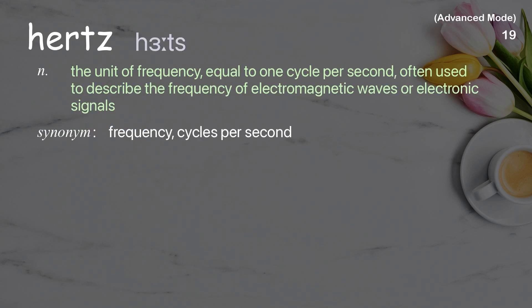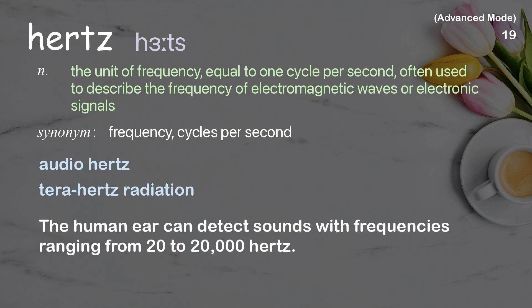Hertz: the unit of frequency equal to one cycle per second, often used to describe the frequency of electromagnetic waves or electronic signals. Examples: audio hertz, terahertz radiation. The human ear can detect sounds with frequencies ranging from 20 to 20,000 hertz.